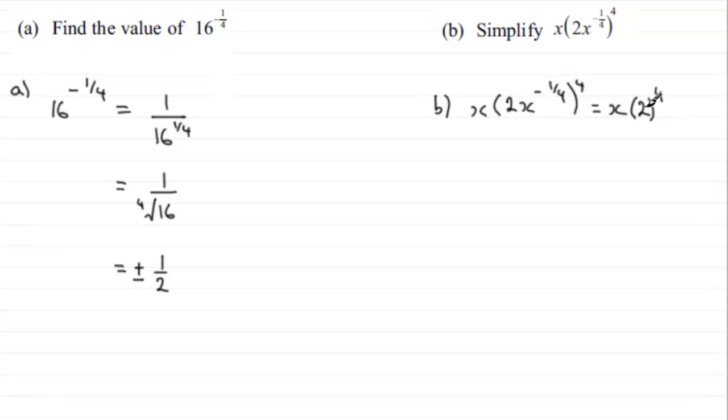And if we simplify this, 2 to the power 4 is 16 and x times x to the minus 1 is x to the power 0 or just simply 1. So you end up with 16.